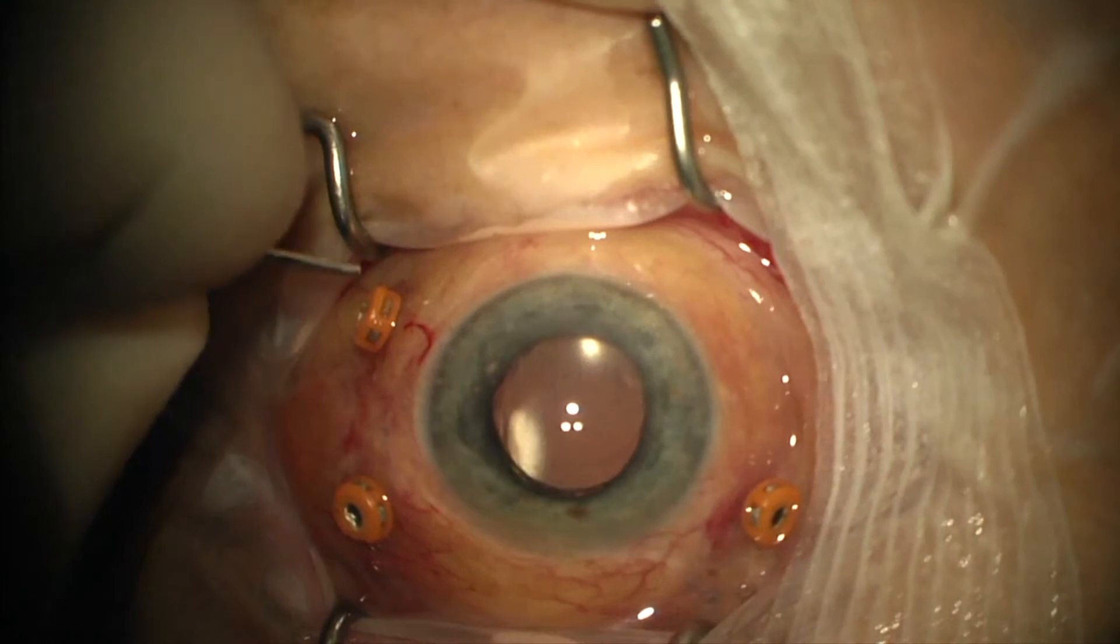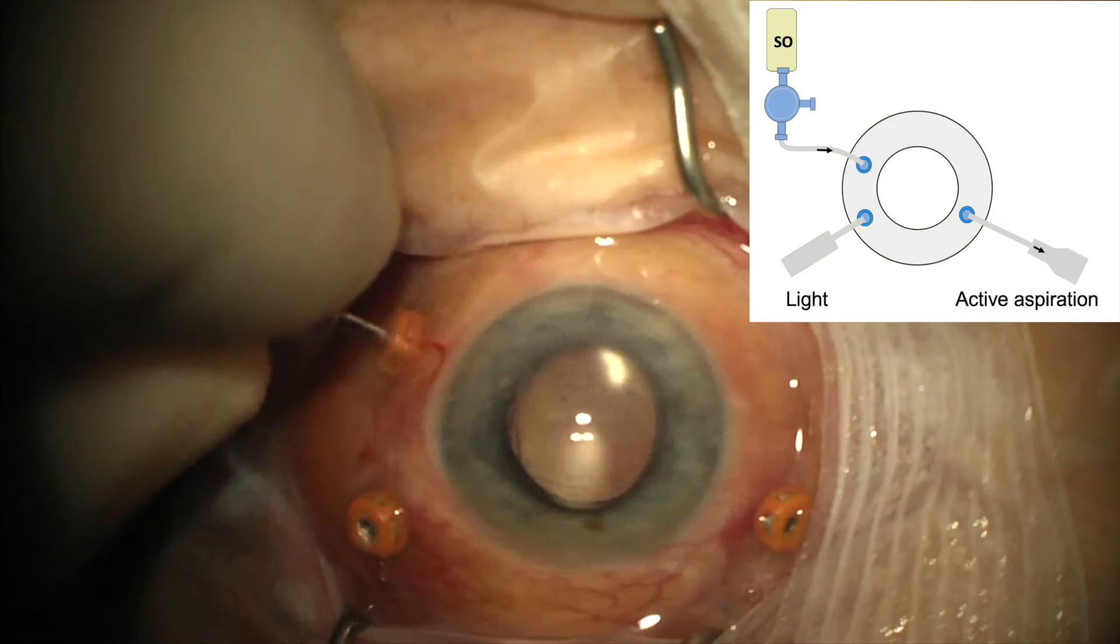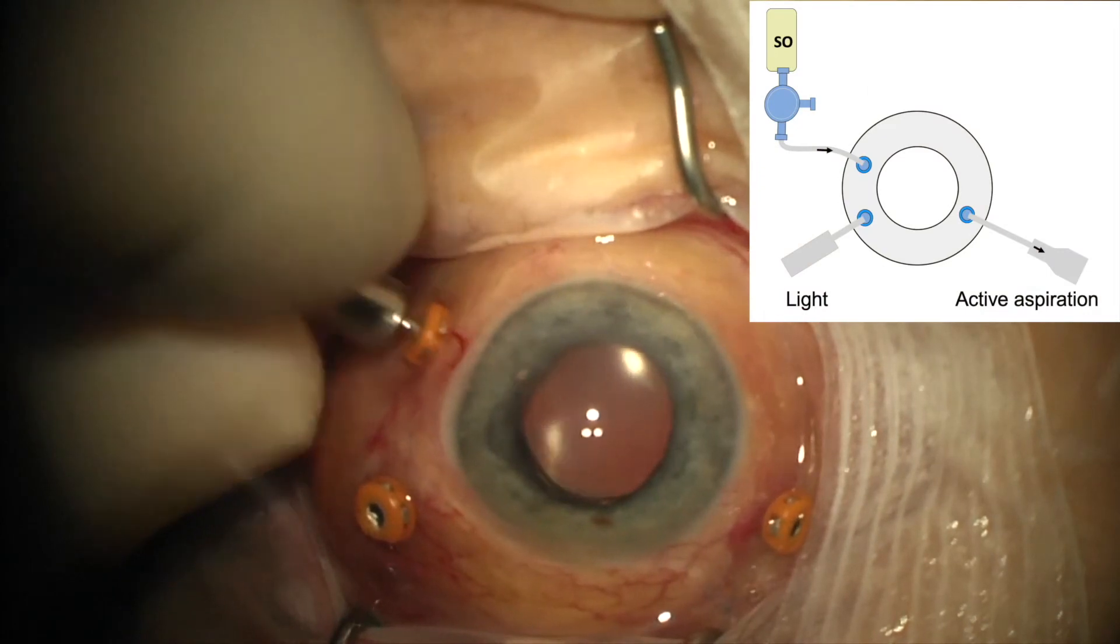The photograph insert shows the rest of the setup with the active extrusion and the light pipe inserted through the superior troopers.